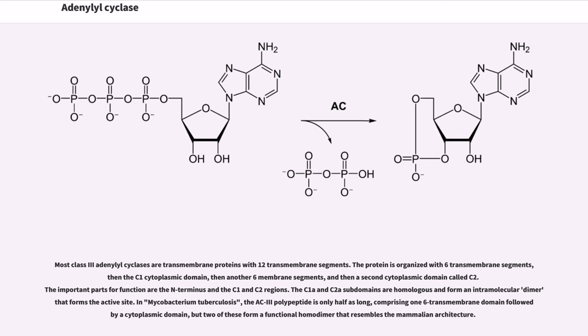In Mycobacterium tuberculosis, the AC3 polypeptide is only half as long, comprising one 6-transmembrane domain followed by a cytoplasmic domain.